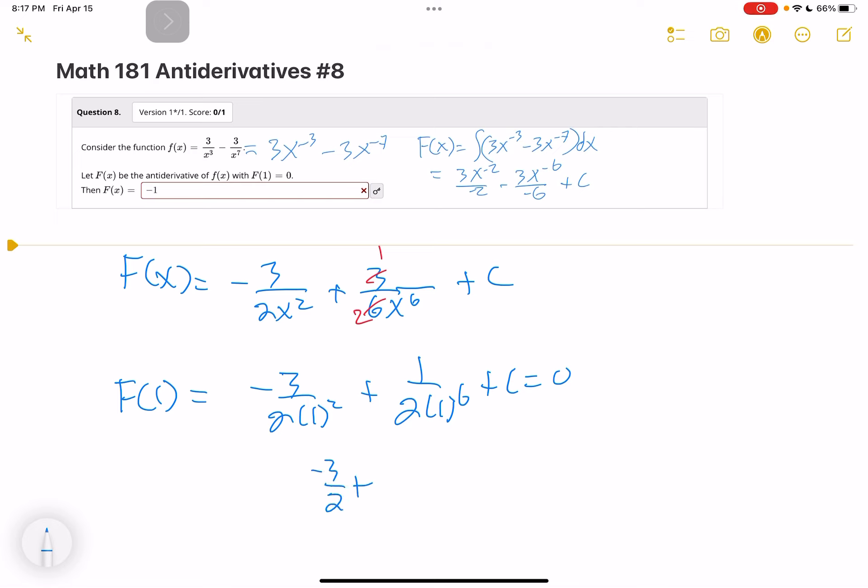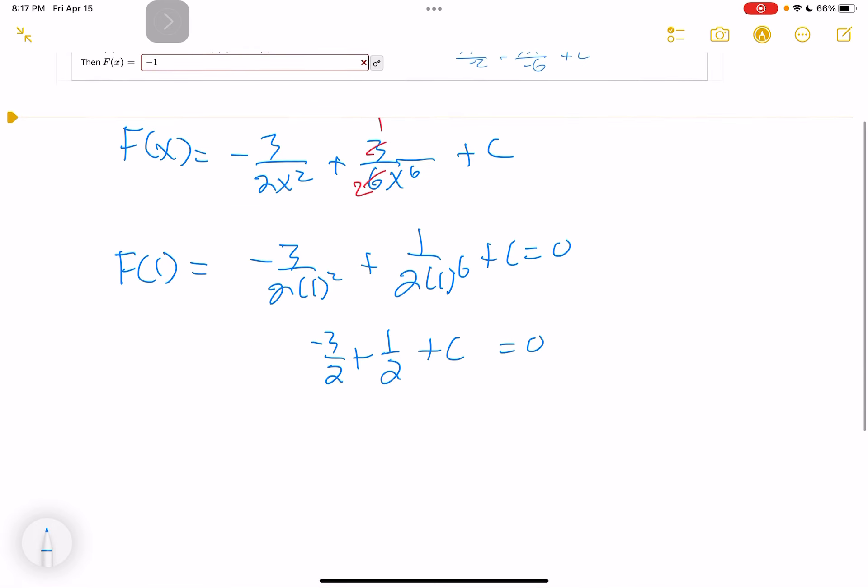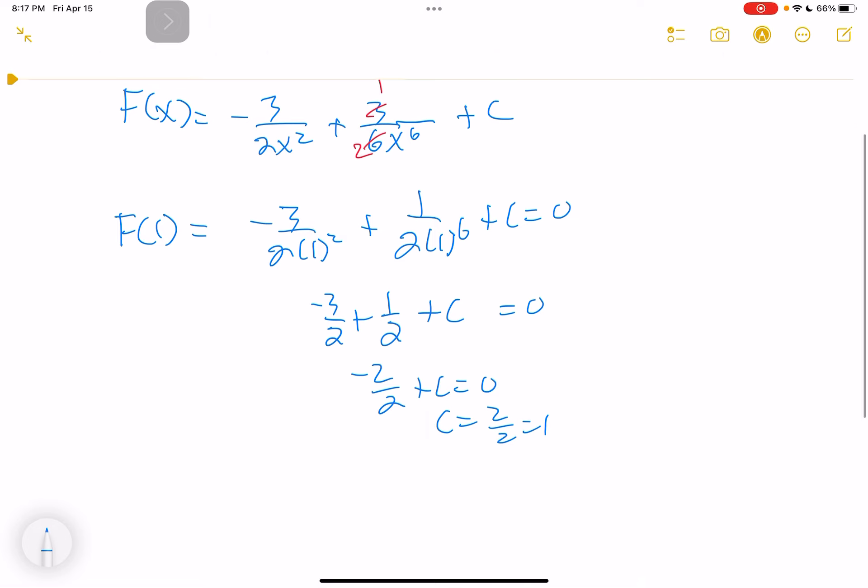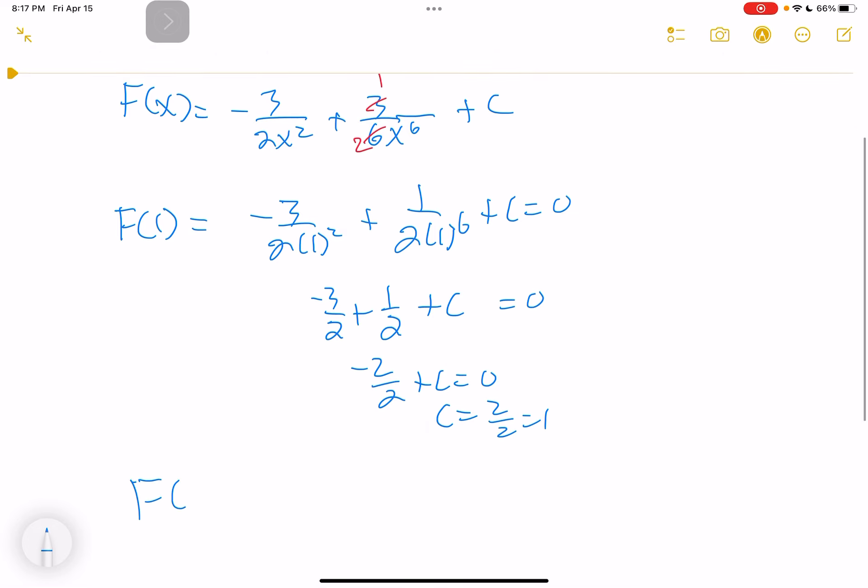So this is negative 3 halves plus 1 half plus C equals 0. Negative 3 halves and plus 1 half, that's negative 2 halves plus C equals 0, so C equals 2 halves or 1.